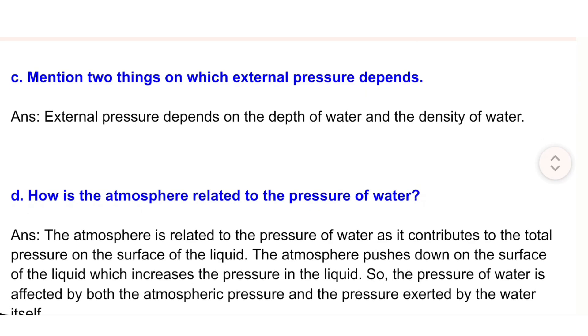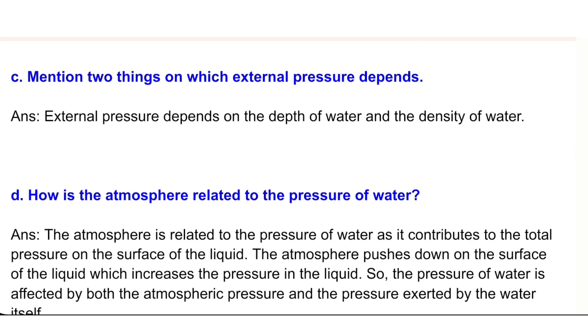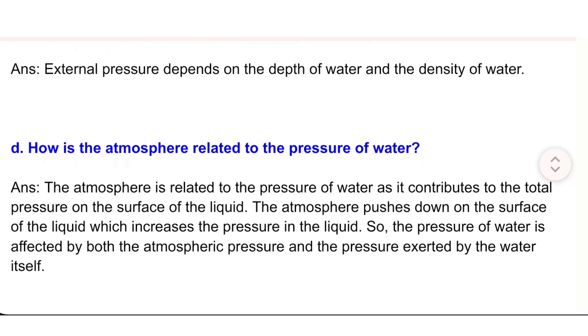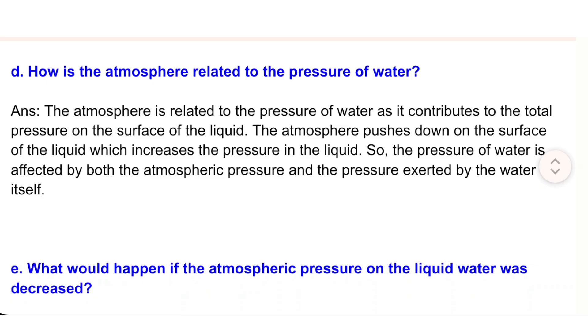c) Mention two things on which external pressure depends. Answer: External pressure depends on the depth of water and the density of water. d) How is the atmosphere related to the pressure of water? Answer: The atmosphere is related to the pressure of water as it contributes to the total pressure on the surface of the liquid.